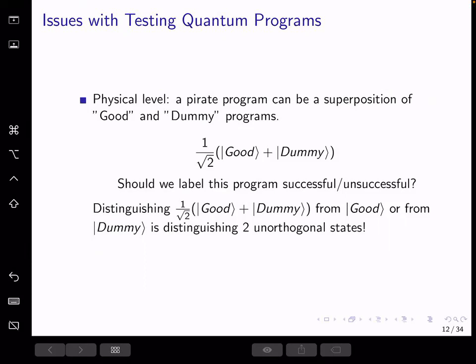Using this state, evaluation is successful on an input with probability one half. But it is impossible to have a procedure that estimates the average success probability of evaluation to very high precision. Because this procedure would imply a procedure that helps us distinguish perfectly the superposition of good and dummy away from the good state or from the dummy state. So we don't know how we can label this program successful or not. This is impossible in general since the two states are unorthogonal and have large overlap.